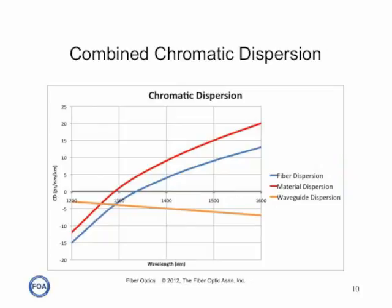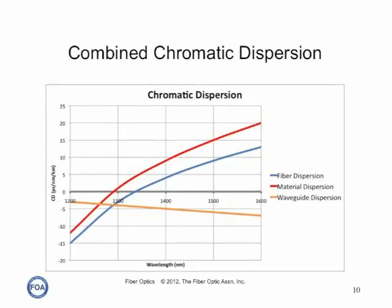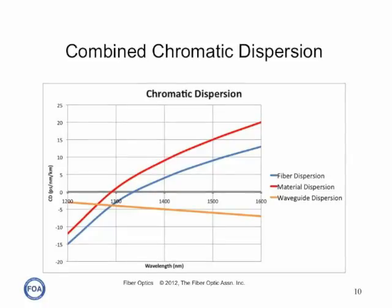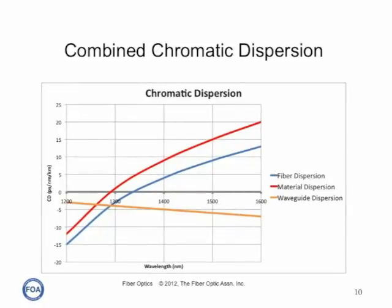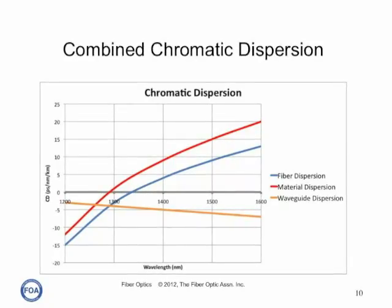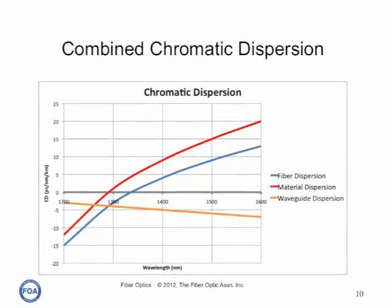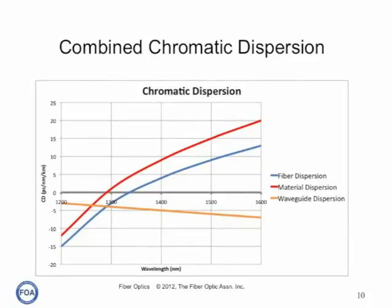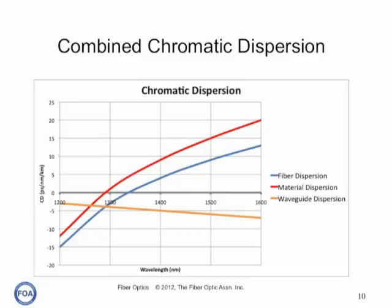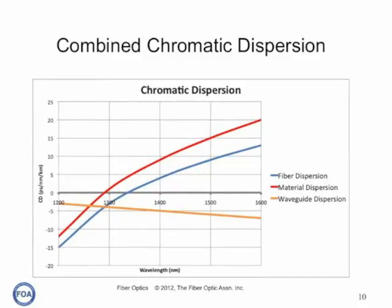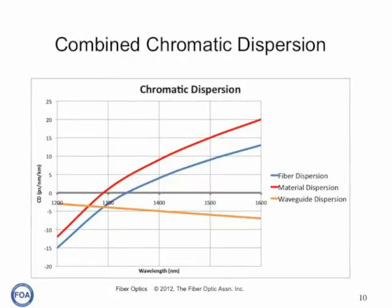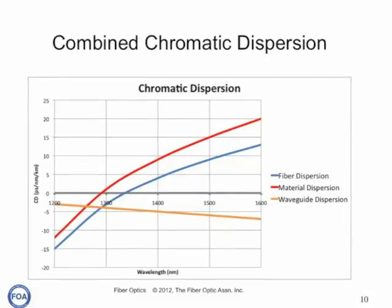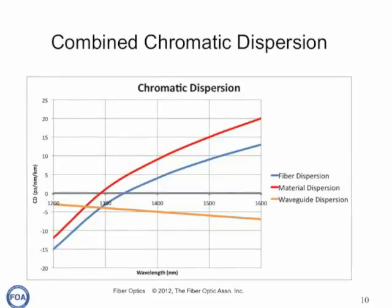Dispersion is one of the factors used in engineering fibers. Material and waveguide dispersion have opposite variations with wavelength, so careful design of the fiber materials and index profiles allows the fiber to have a zero dispersion wavelength. On either side of that wavelength, dispersion increases. The engineering of chromatic dispersion is a function of the application, and different single mode fibers have been developed for specific applications. The blue line on this graph shows the combined chromatic dispersion — a combination of material dispersion in red and waveguide dispersion in orange.